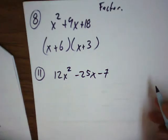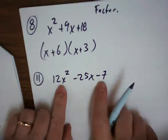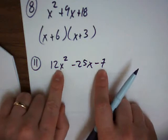It might take you a while to guess and check these answers. So what you do is you multiply the front and the back, the A and the C value.